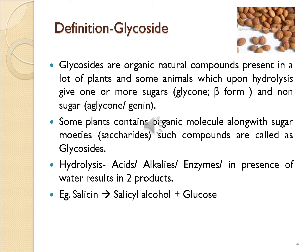Glycosides are organic natural compounds present in many plants and some animals which, upon hydrolysis, yield one or more sugar moieties along with a non-sugar moiety. Here the sugar is called the glycon part and the non-sugar is called the aglycone part. Simply stated, plant organic molecules combined with sugar moieties are called glycosides.